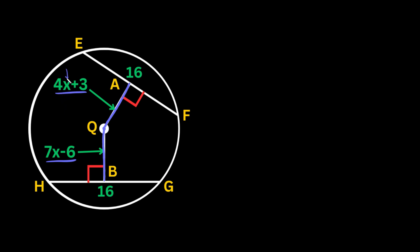Now that x equals 3, we can plug it into either expression — they'll give the same answer. Plugging into 4x plus 3: 4 times 3 is 12, and 12 plus 3 is 15. So the distance from each chord to the center is 15.